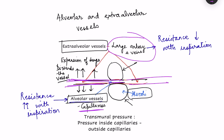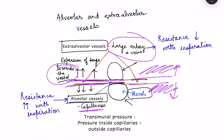During inspiration the lung starts expanding, intrapleural pressure becomes more negative, and the interstitial tissue surrounding extraalveolar vessels gets stretched. This stretch distends the vessel walls, increasing their diameter. With increased diameter, resistance of these extraalveolar vessels decreases with inspiration.